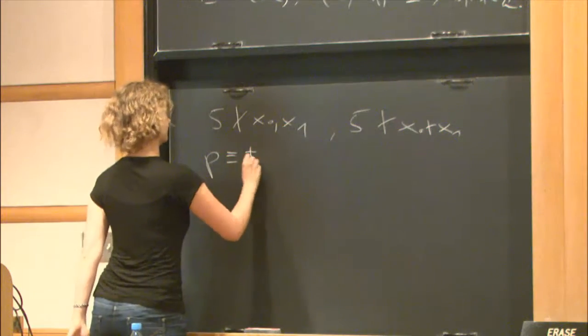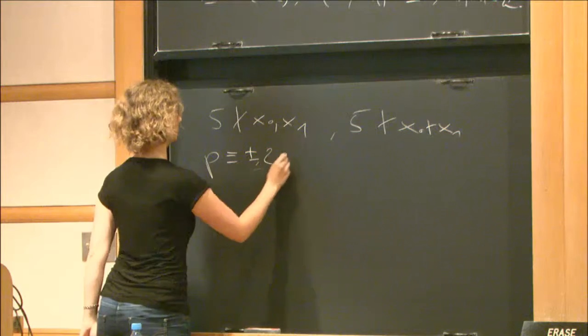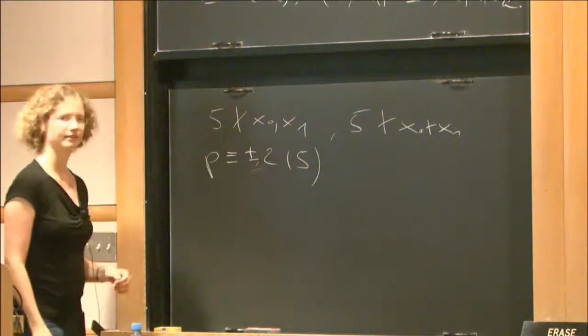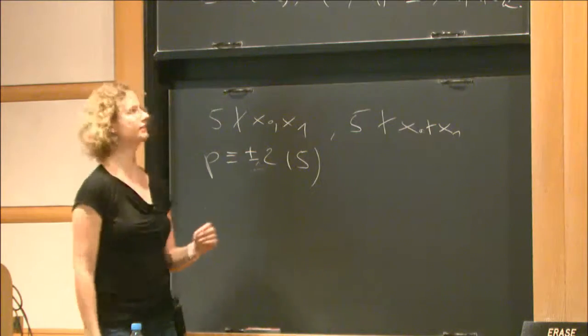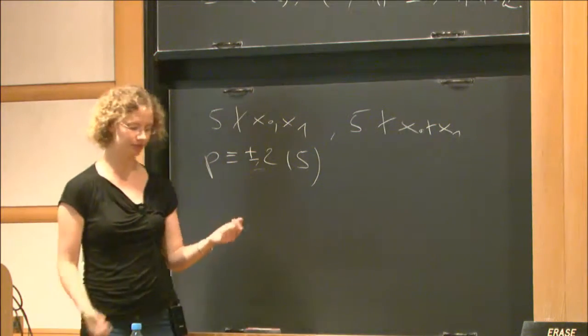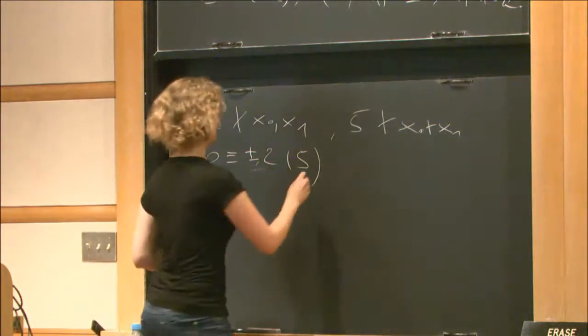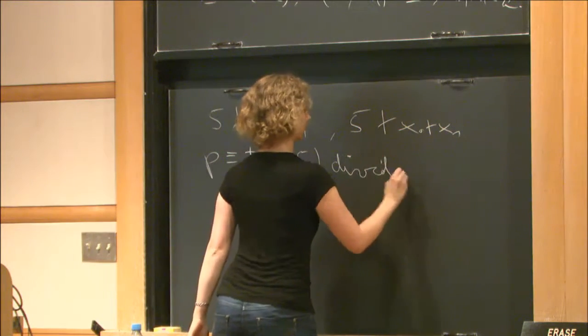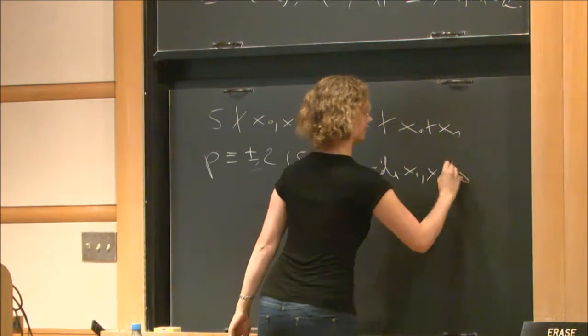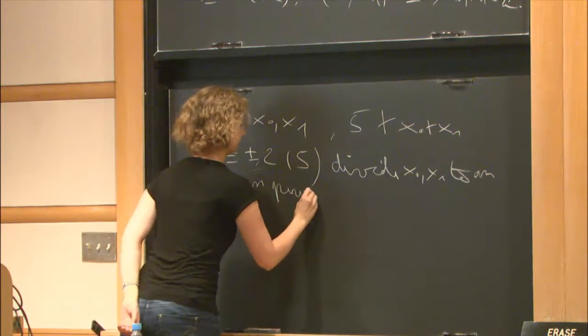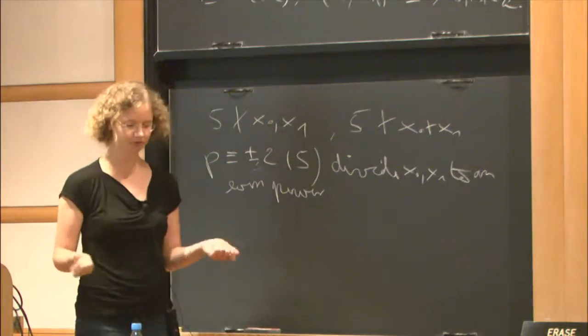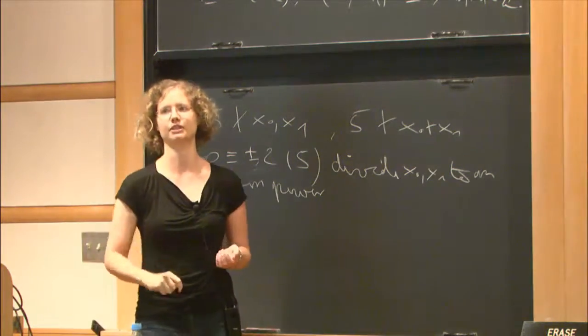Now let's consider a prime which is congruent to plus minus 2 modulo 5. Such a prime is inert in the extension Q adjoin square root 5 and hence it has to divide both x0 and x1 which are co-prime to an even power. So all such primes divide x0 and x1 to an even power. This is the same phenomenon as if you want to write an integer as sum of two squares and primes congruent to an even power.